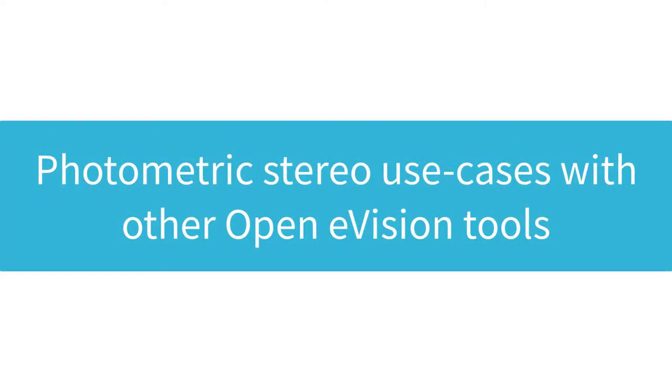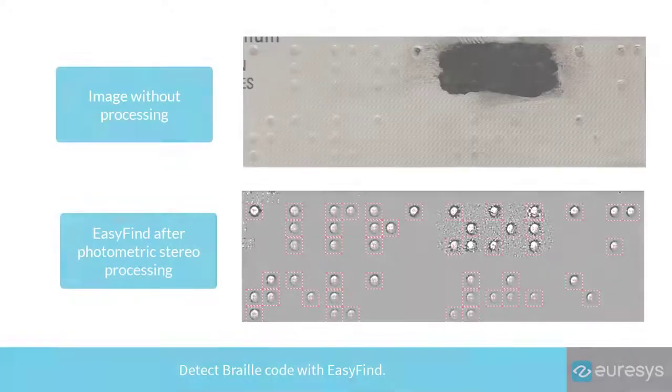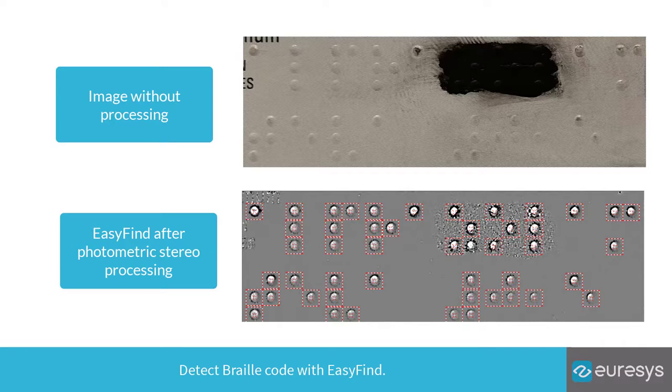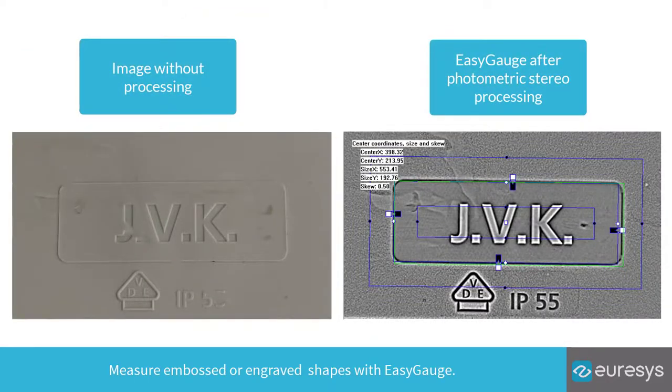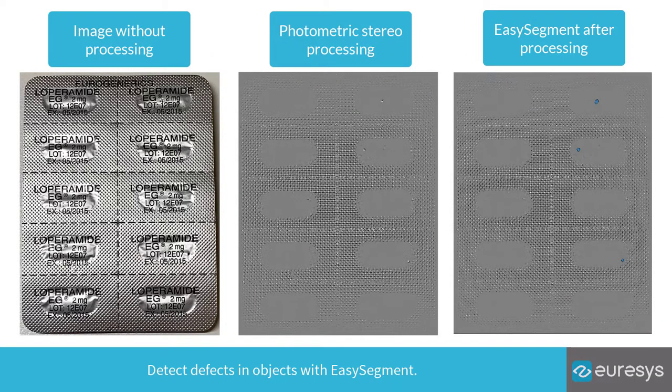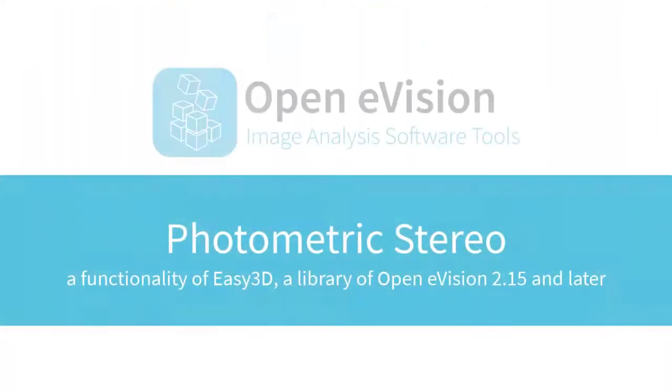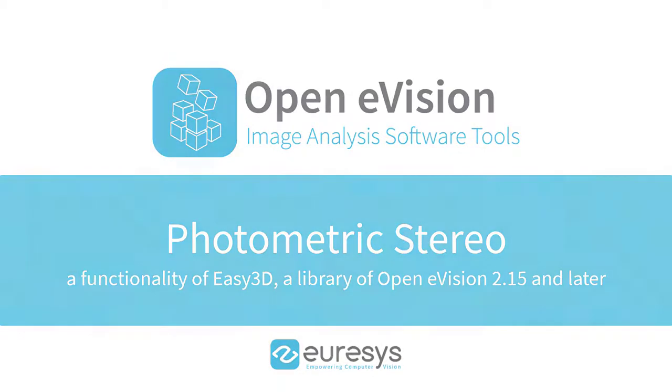Photometric stereo use cases with other OpenE-Vision tools. Detect Braille code with EasyFind. Read embossed or engraved characters with EasyOCR2. Measure embossed or engraved shapes with EasyGauge. Detect defects in objects with EasySegment. A library of OpenE-Vision 2.15 and later.